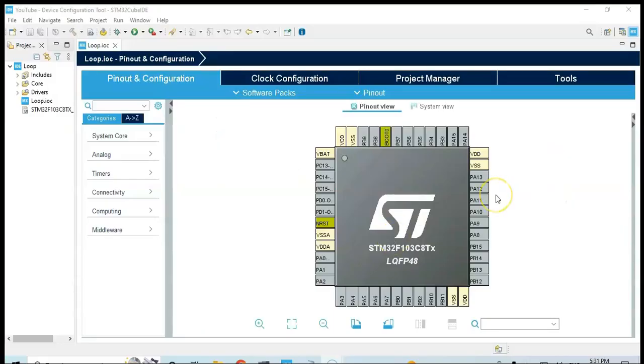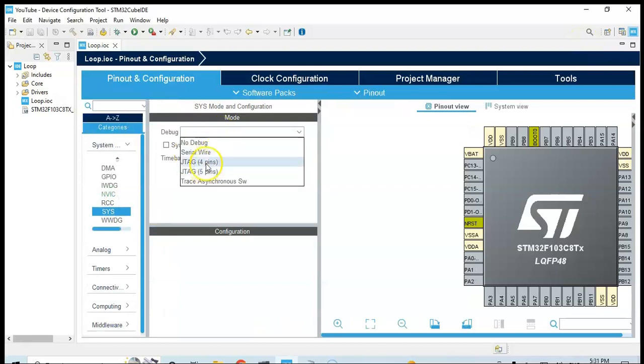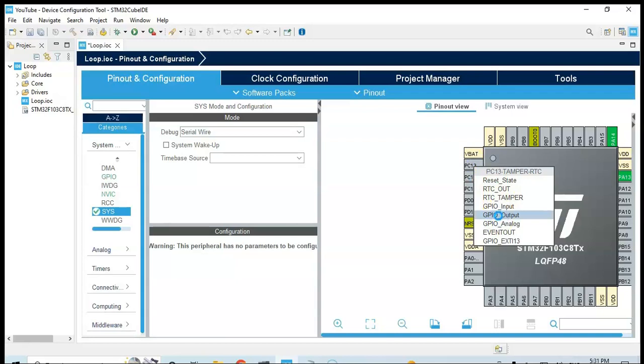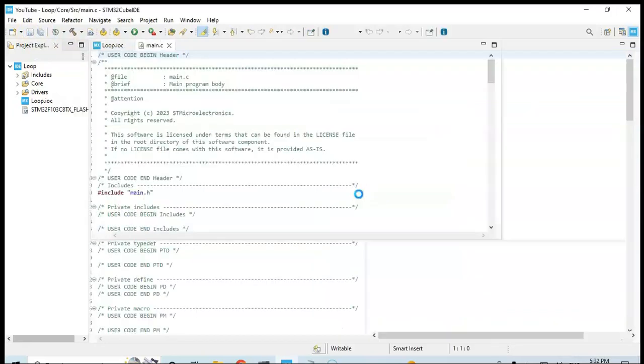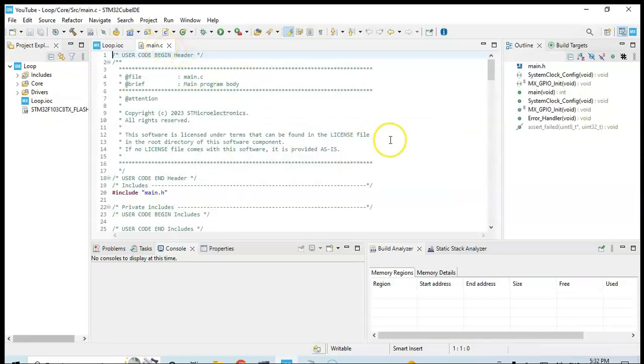Now I have opened the Cube IDE again. I tell the Cube IDE installation video is here. I click system core, sys for the debug, select serial wire. And PC13 make it as a GPIO output. And we can click save and generate the code. Click save and it will generate the code.